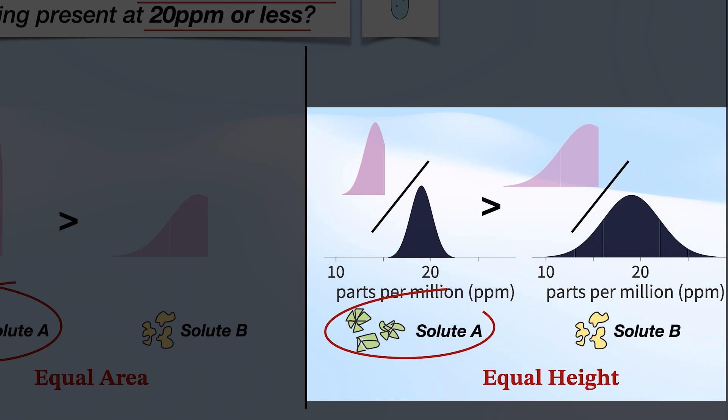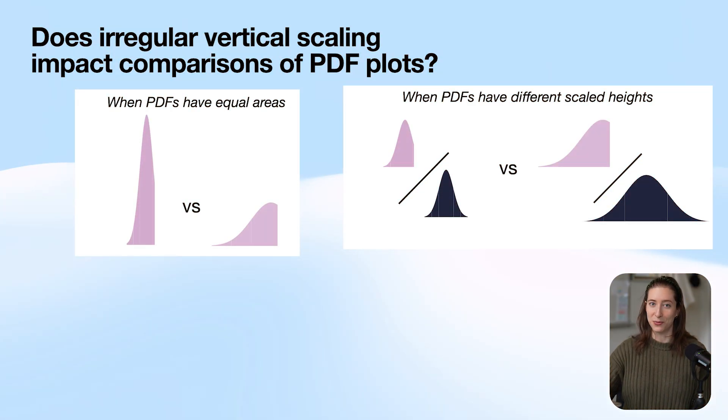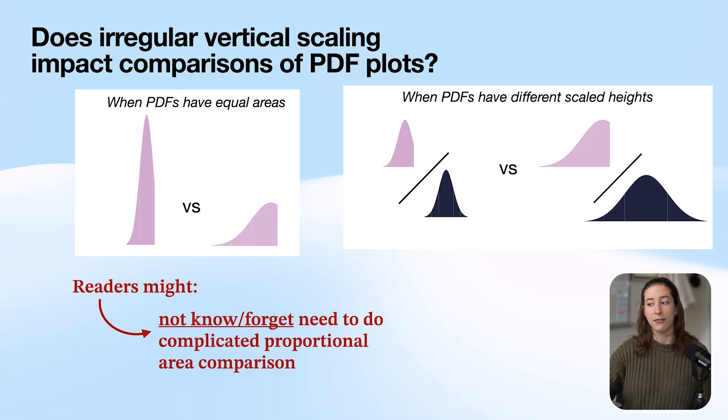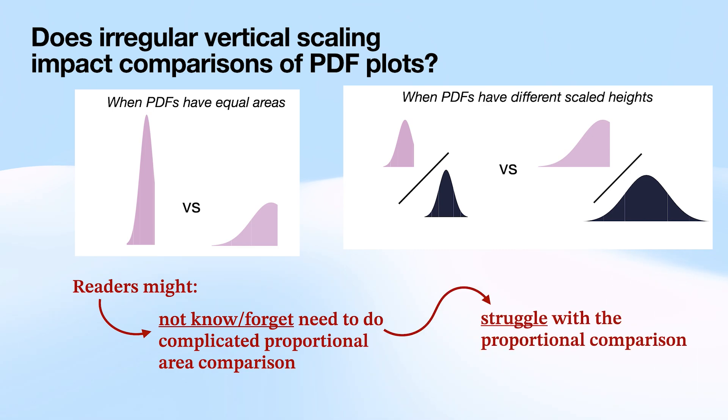If we do this, we will get the correct answer that solute A has a higher probability of being present at 20 ppm or less. So both of these methods work, but we thought that readers might either not know or they might forget that they have to do this complicated proportional comparison required when PDFs have different scaled heights, or that they might struggle with that proportional comparison just because it's more complex.